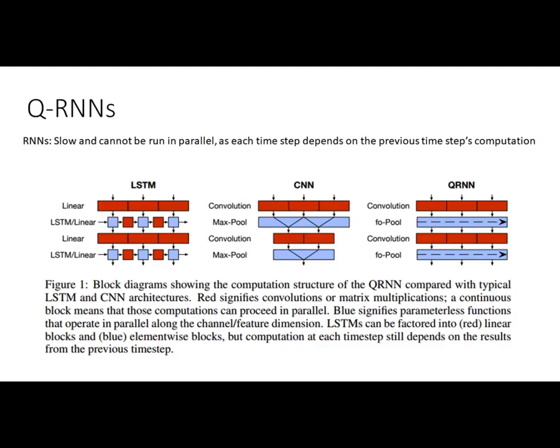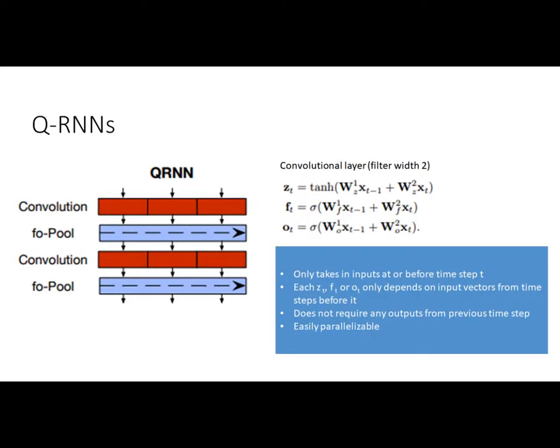For Quasi-RNNs, the main complaint about RNNs is that they are slow and cannot be run in parallel, largely because each time step's computation depends on the previous time step's output. The Quasi-RNN aims to fix this. At the first convolution layer, as opposed to a normal RNN where you take in the hidden state from the previous node, it lines up the convolution layer to only take in the input vectors x.